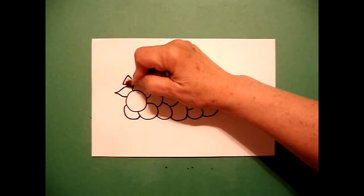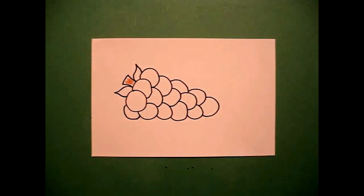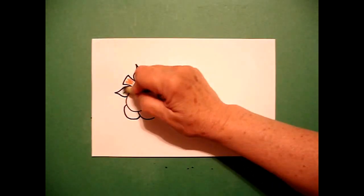I'm going to take brown and I'm going to color my stem brown. And I'm going to get a dark green and color my leaves green.